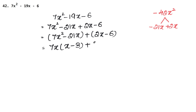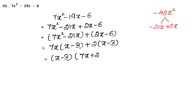Now in brackets: 7x squared minus 21x, and plus 2x minus 6. In the first bracket, 7 and x are common so 7x is common, giving 1x minus 3. In the second bracket, 2 is common giving 1x minus 3. Both brackets are the same, so we take x minus 3 common. The answer is (x-3)(7x+2).